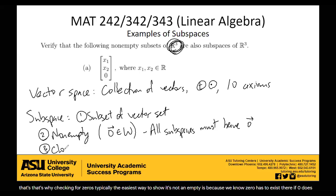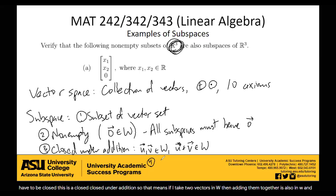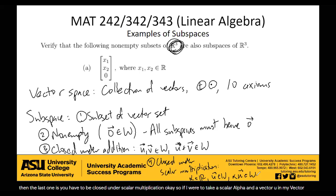The other two rules — your closure properties have to hold. You have to be closed under addition: if I take two vectors in W, then adding them together is also in W. And then the last one is you have to be closed under scalar multiplication: if I take a scalar alpha and a vector U in W, then scaling U by alpha is still in W. So these are the four properties of being a subspace. Subspaces are themselves vector spaces — they're just smaller vector spaces.